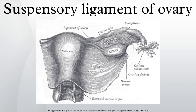Structure: it contains the ovarian artery, ovarian vein, ovarian nerve plexus, and lymphatic vessels.